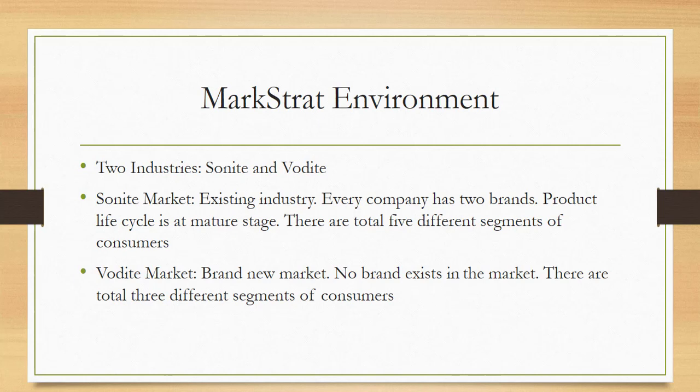In this simulation game there are two markets: SonaMarket and VodaMarket. The two markets are independent from each other. SonaMarket is an existing market. Every company who competes in the marketplace has two brands. The product life cycle is at the mature stage. In SonaMarket there are five different segments of consumers: professionals, high earners, explorers, shoppers, and savers.